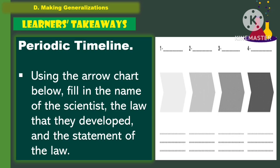In making generalizations for the learner's takeaways, the students will accomplish the activity called periodic timeline. Using the arrow chart below, fill in the name of the scientist, the law that they developed, and the statement of the law.